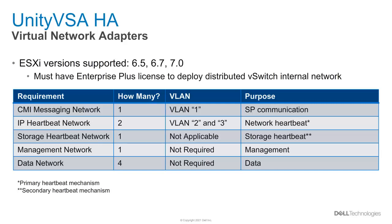vCenter must also have an Enterprise Plus license which allows the deployment of distributed V switches. Unity VSA HA uses a V switch as an internal network which is needed for proper communication between each storage processor virtual machine. The V switch internal network consists of two networks: the common messaging interface (CMI) and the IP heartbeat network. The storage heartbeat network is from the heartbeat data stores mentioned previously. The management and data networks are also deployed for storage management and data connectivity.